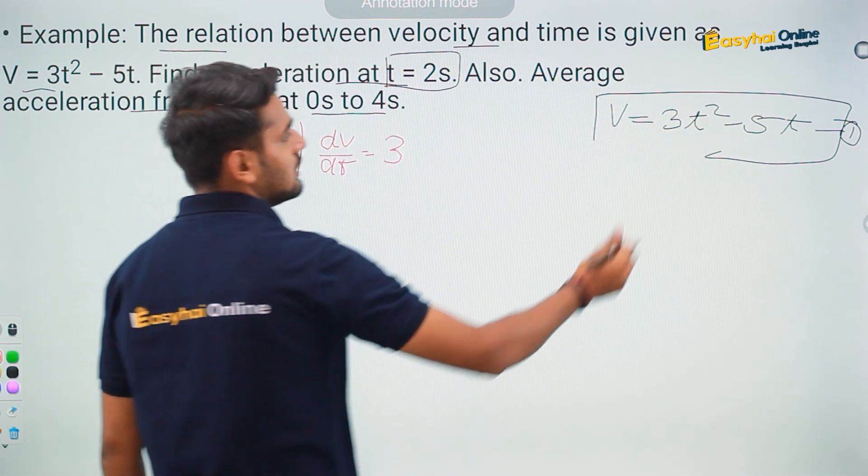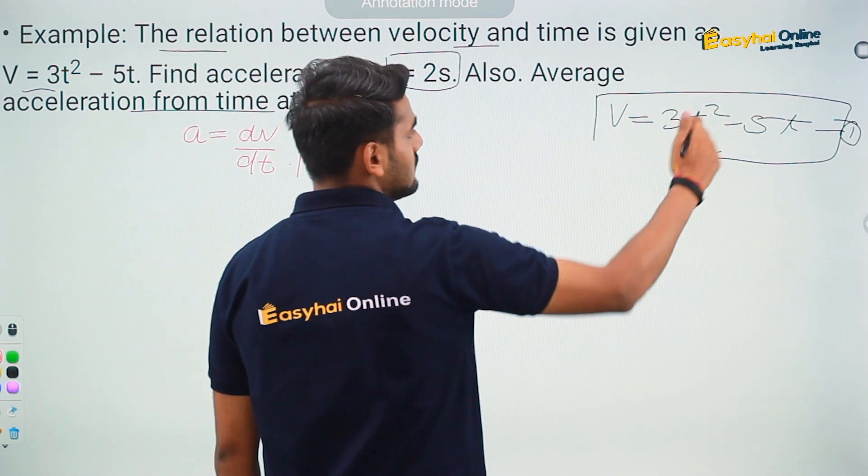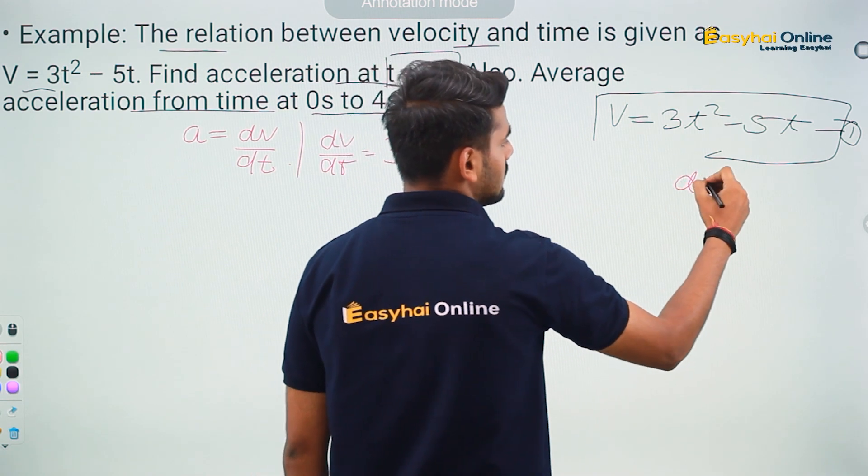3 is a constant, so it will be as it is. I will differentiate t square with respect to t. So dt square upon dt it will be like this.